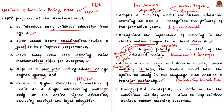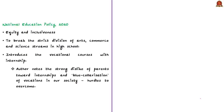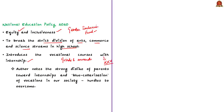Another welcoming element in this policy is provisioning of an energy-filled breakfast in addition to a nutritious midday meal, helping children arrive at school on time and achieve better learning outcomes — particularly for children from disadvantaged households. For making education equitable and inclusive, there is provision for a gender inclusion fund, and the policy recognizes and supports socially and economically disadvantaged children and differently-abled children. The policy also aims to break the strict separation of arts, commerce, and science streams in high school, and introduces vocational courses with internship from Grade 6.